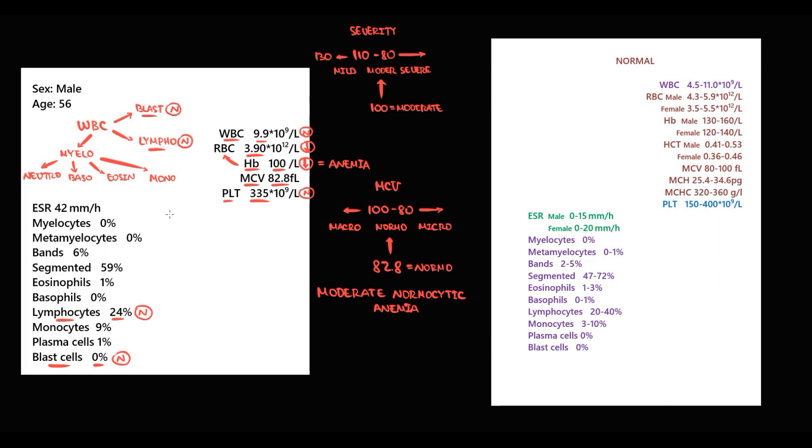Next are lymphocytes. Lymphocytes are 24%, which is normal. In myelocytes, we first look at neutrophils. Segmented forms are normal, bands normal, metamyelocytes normal, and myelocytes normal. All forms of neutrophils are perfectly normal, so there is no inflammation.